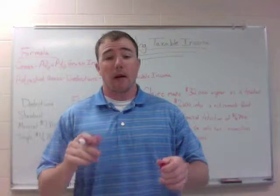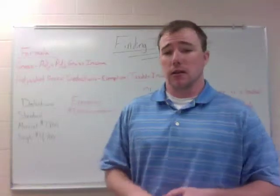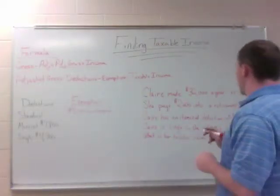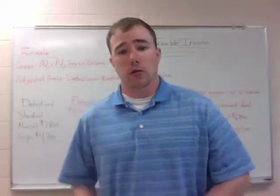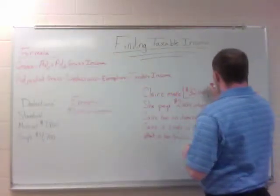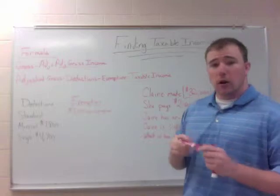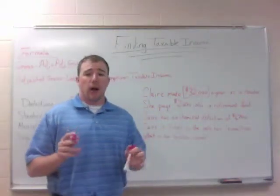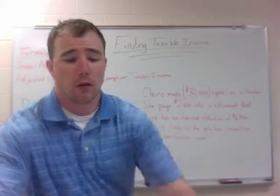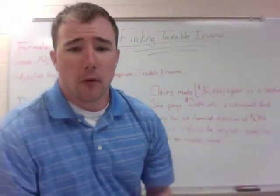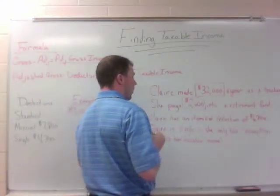Adjusted gross income is what we need to find for step one, so let's find the adjusted gross income first and then we'll move on to the next step. Our problem today says Claire made $32,000 a year as a teacher. $32,000 a year is her gross income. She pays $2,600 into her retirement fund — an approved retirement fund. Any time you have an approved retirement fund, you know that is an adjustment. So our adjustment to our gross pay is $2,600 — that's our retirement fund.